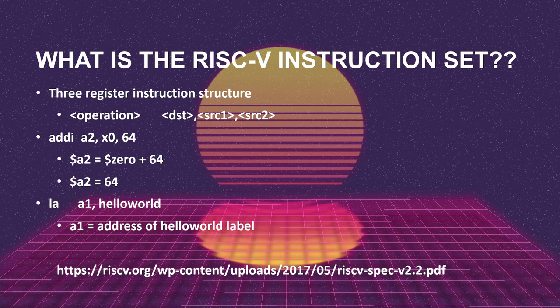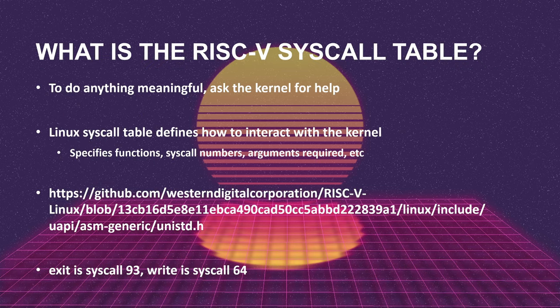I won't dive too deep into individual instruction examples, but you can look at the RISC-V spec written by UC Berkeley for more detail. We can move data in and out of registers, but to do anything meaningful, we need to ask the kernel for help. To do that, we abide by the Linux syscall table convention, which defines how we interact with the kernel — the functions we can call, syscall numbers, and the required arguments.